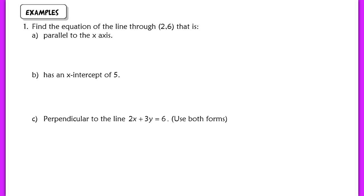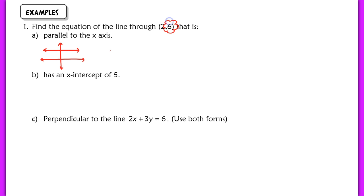Let's work on a few basic examples. The first example says: find the equation of the line through (2, 6) that is parallel to the x-axis. If you want a line that's parallel to the x-axis, this is going to be a horizontal line. Since it goes through the point (2, 6), the y-coordinate, which is 6, defines that line. So our equation is y equals 6.